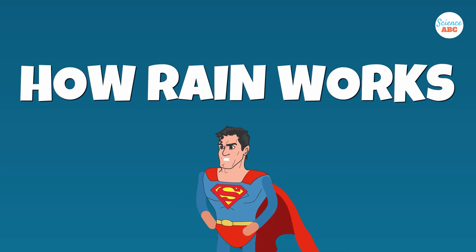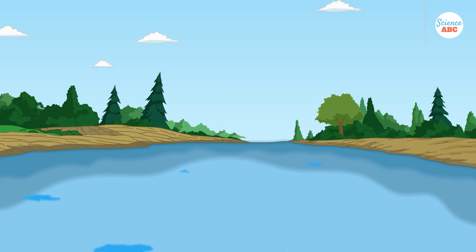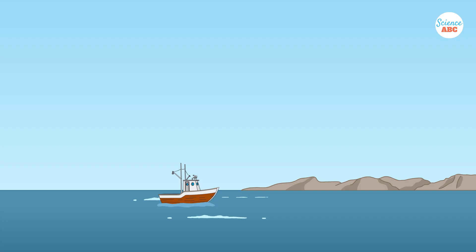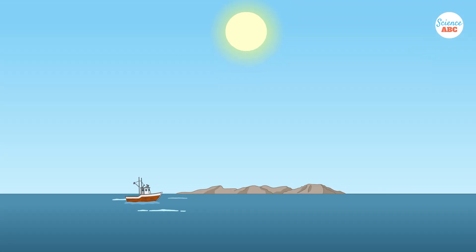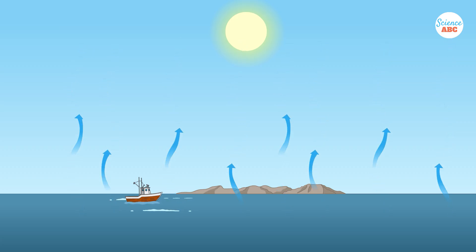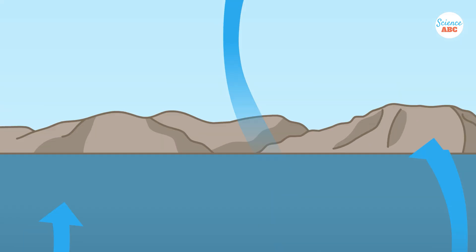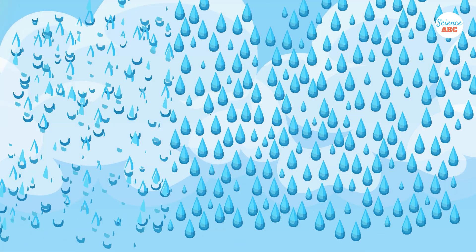To understand how cloud seeding works, we first need to grasp how rain occurs. Here's a simplified breakdown of the process. Water from lakes, rivers, and oceans evaporates due to the sun, turning into water vapor. This vapor rises into the sky and cools down after reaching a certain altitude, forming tiny water droplets. Although these droplets are not individually visible, when millions of them collect, they take the form of clouds.